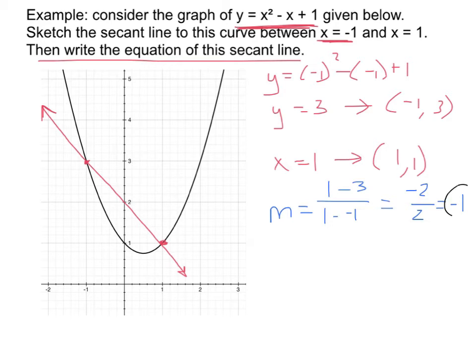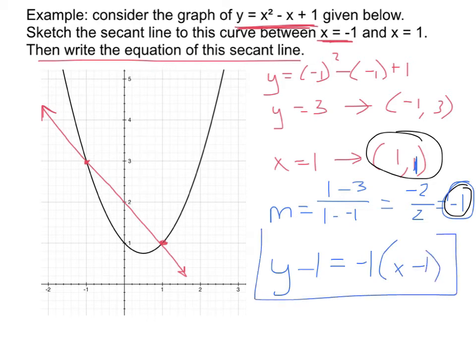I now have a slope, and I will pick a point. And I can use those things to write my point slope form of the line. y minus 1, the 1 coming from the point, equals negative 1, that came from the slope, times x minus 1. And that's the equation of my secant line.